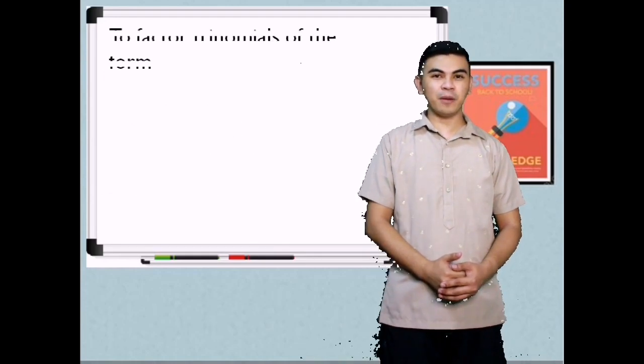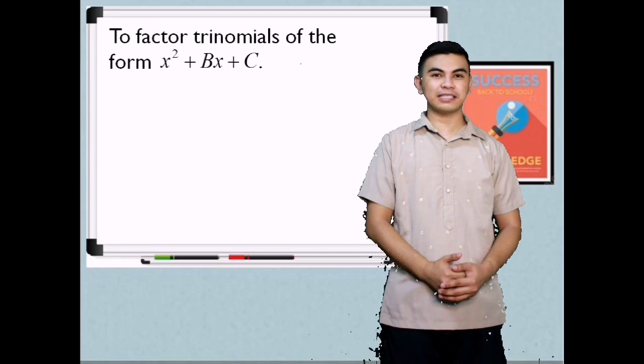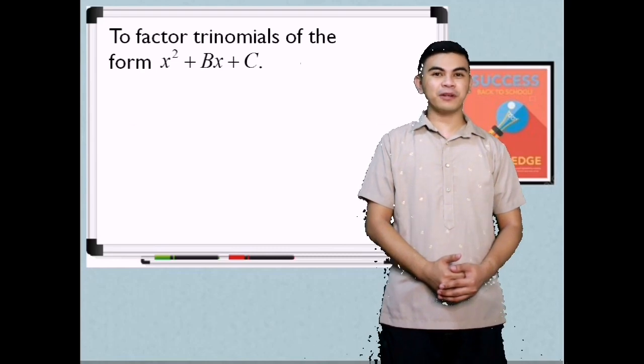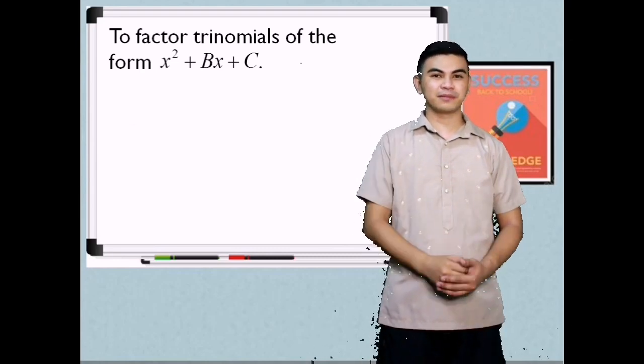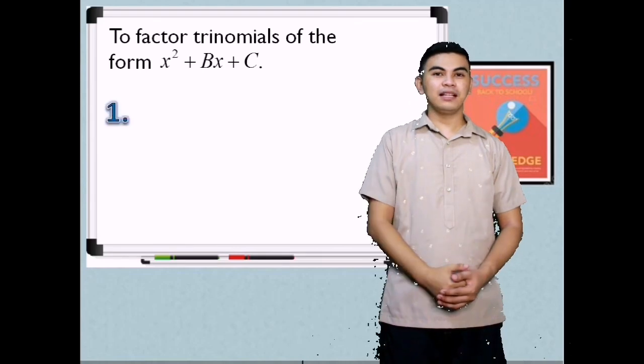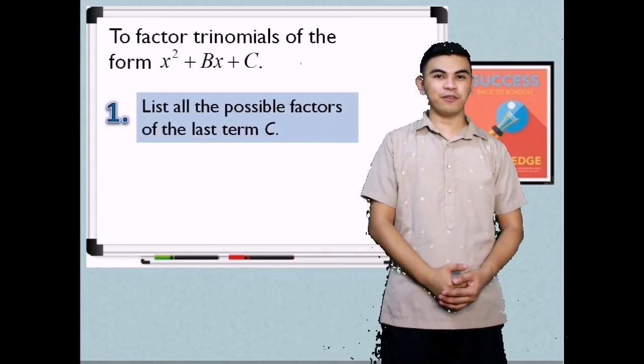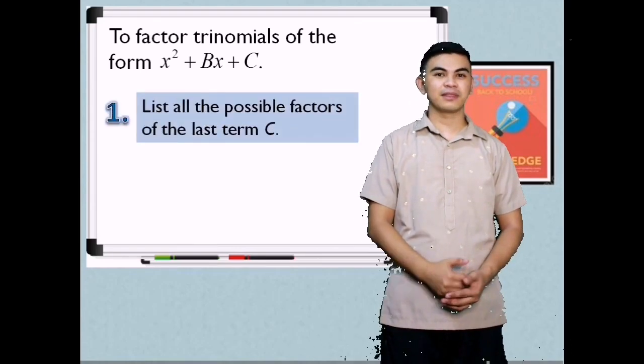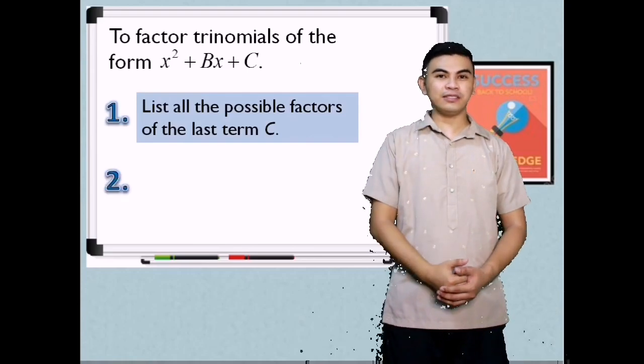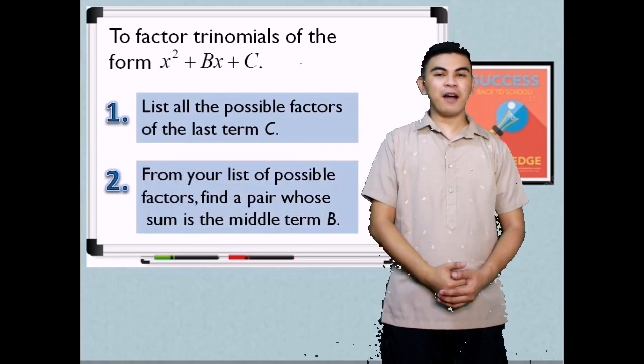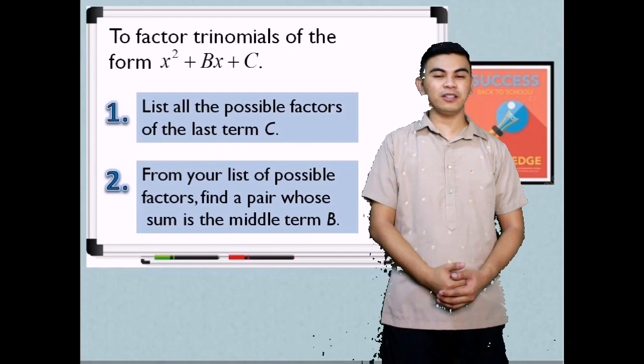To factor trinomials of the form x squared plus bx plus c, you need to remember these two steps. First step, list all the possible factors of the last term c. Second step, from your list of possible factors, find the pair whose sum is the middle term b.